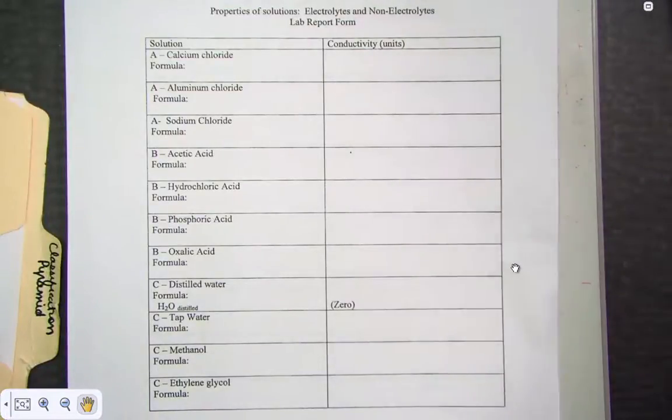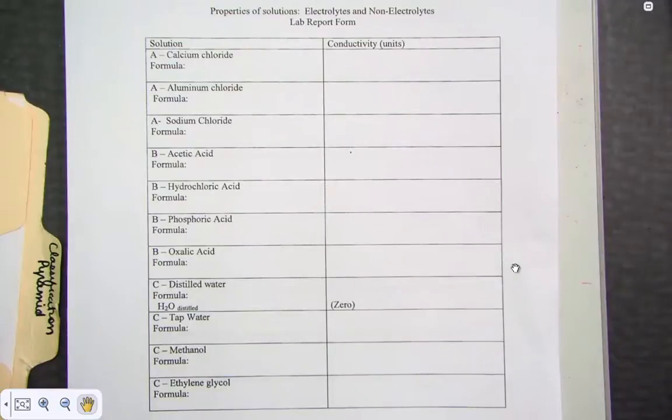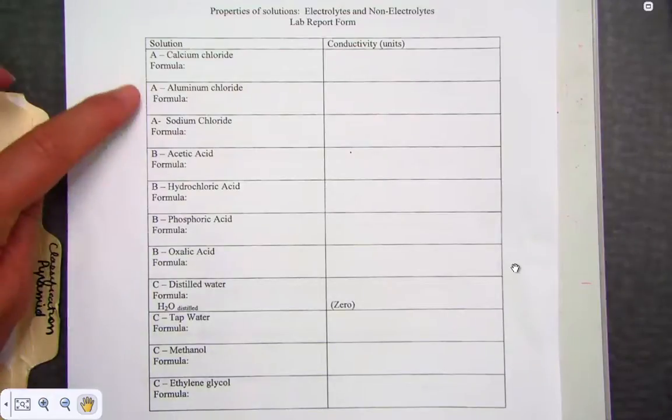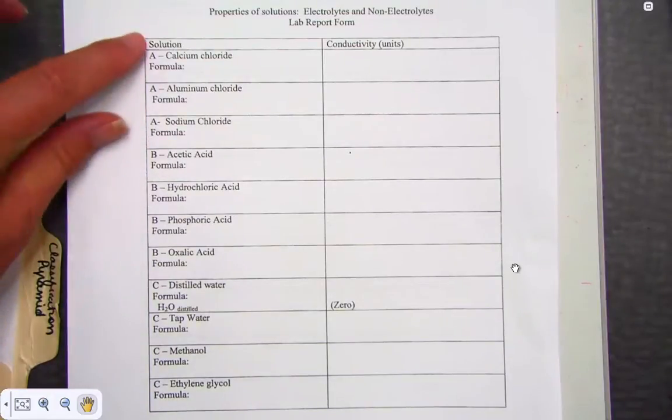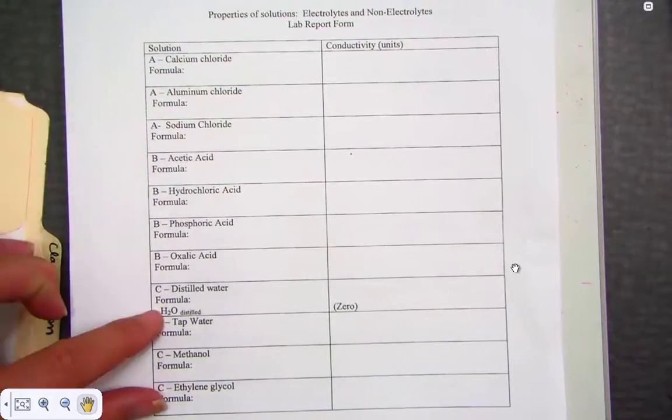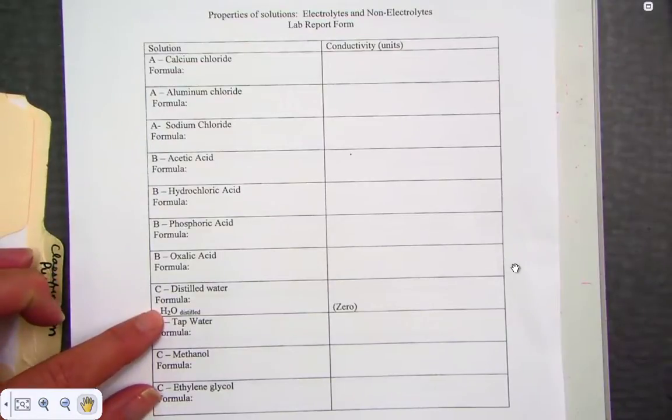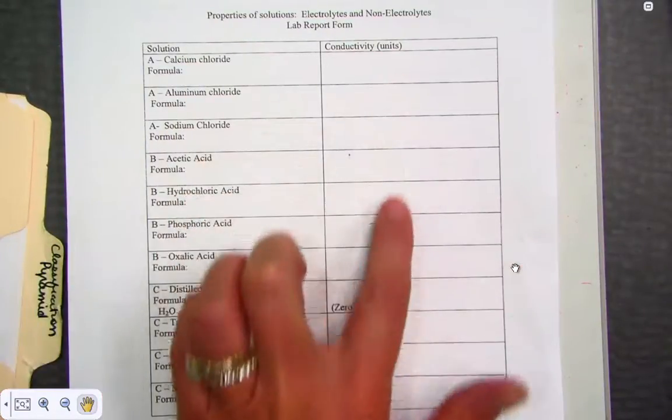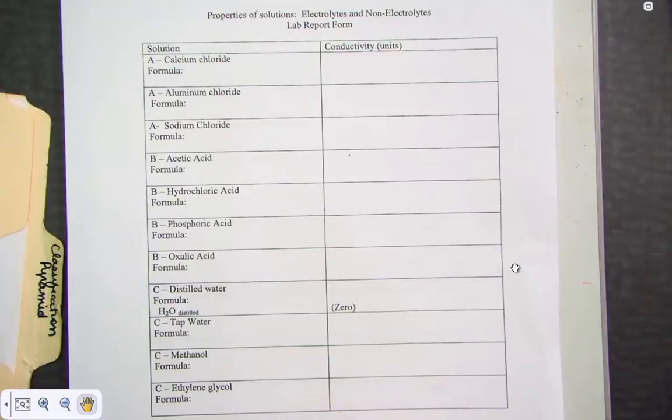This short video lesson will allow you to debrief on your electrolyte lab we conducted with the use of a conductivity meter. We had three categories of compounds, category A, B, and C, in which we placed a conductivity meter and simply had to record the value given to us from our calculator-based chemistry.